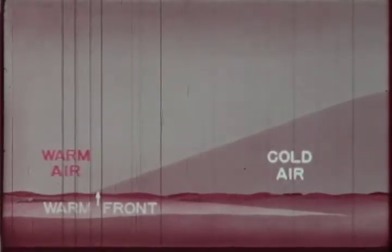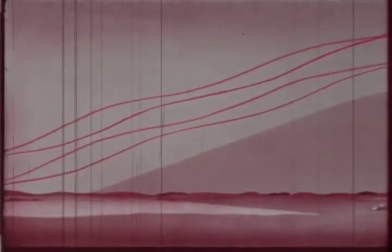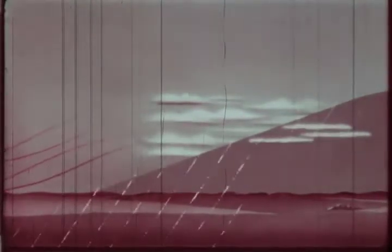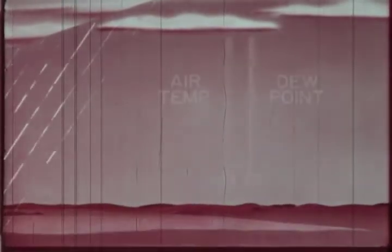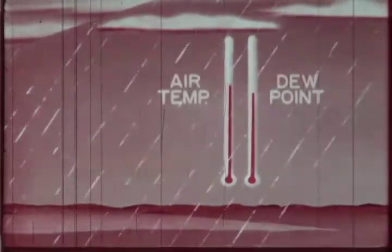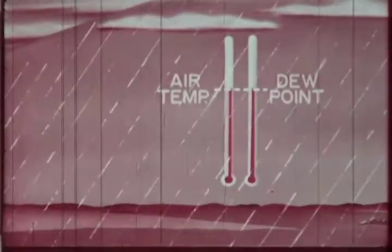Along the warm front, warm air lies over a wedge of cold air. As the front moves, the warm air rises and is cooled adiabatically; moisture condenses and clouds form. Rain falls from the clouds into the cold air below. Evaporation of the rain lowers the air temperature and raises the dew point until the air temperature and dew point coincide, and fog then forms.